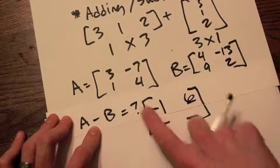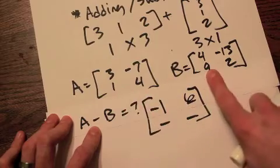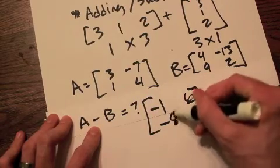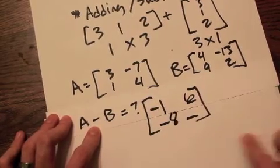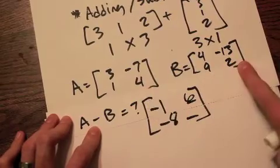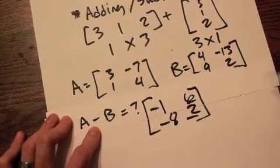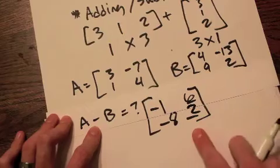You move to this spot. One, minus nine. That gives you negative eight. Over here, four, minus two, gives you two. That is your answer.